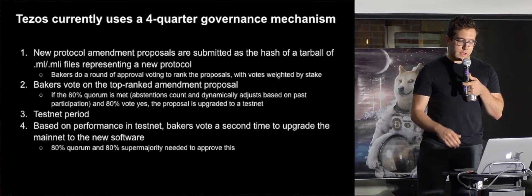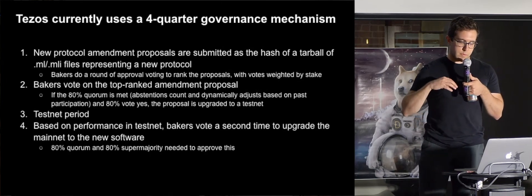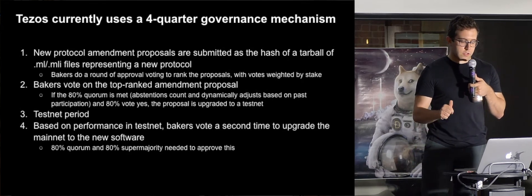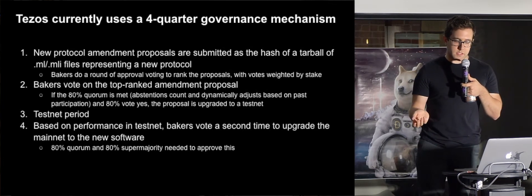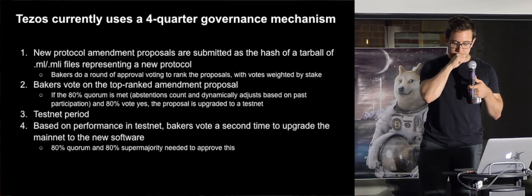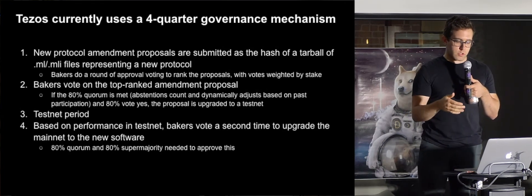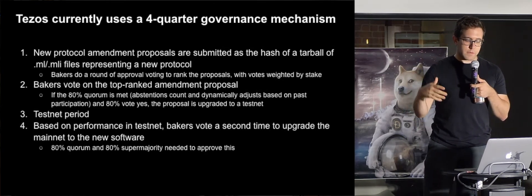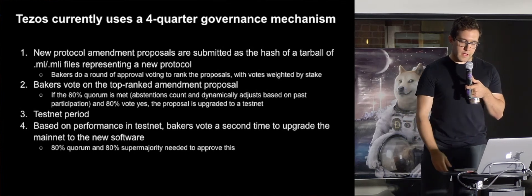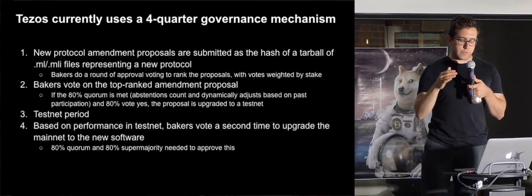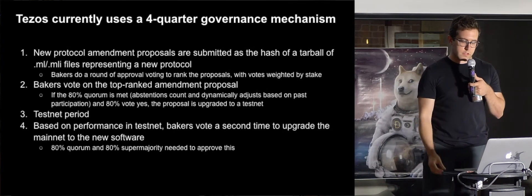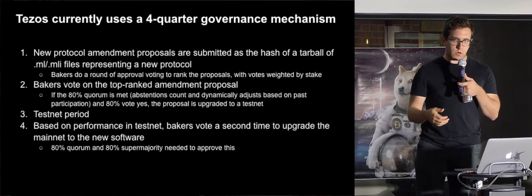The current governance mechanism is a four-quarter governance mechanism. A baker proposes a protocol amendment as a hash of the tarball of a .ml file representing a new protocol. All the bakers do a round of approval voting to rank the proposals — votes are weighted by stake. Bakers vote on the top-ranked amendment proposal if they reach an 80 percent quorum, including people who actively abstain, and that counts towards quorum. This quorum can dynamically adjust based on past participation. If 80 percent vote yes, the proposal is upgraded to a testnet. There's a testnet period, and then bakers vote a second time to run it as mainnet — they run both and switch to the new one if they pass an 80 percent quorum and an 80 percent supermajority.